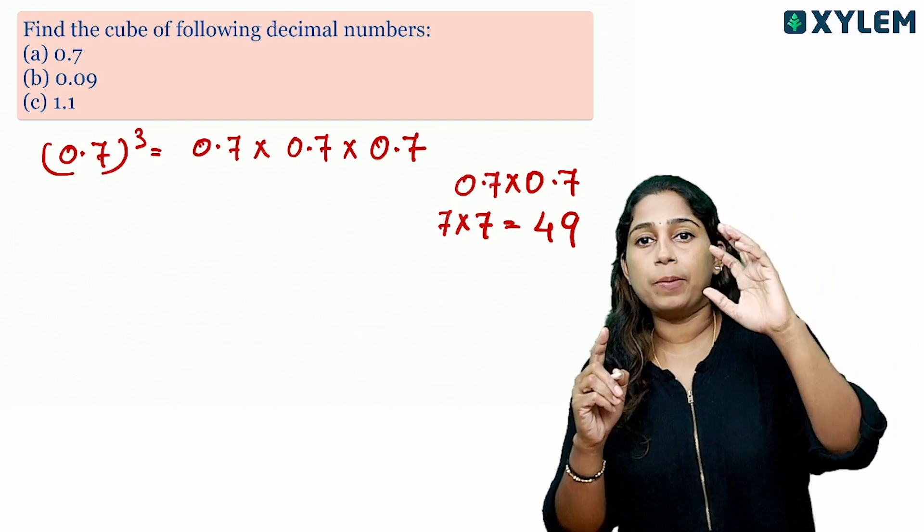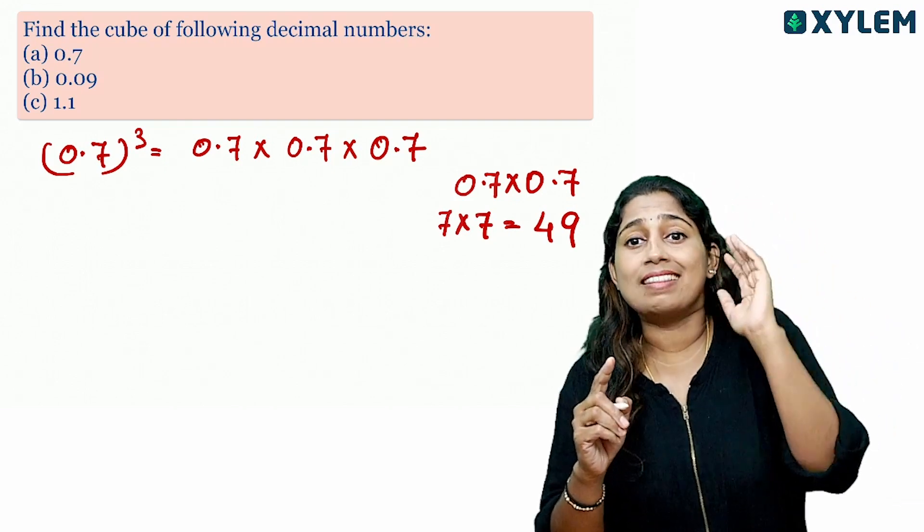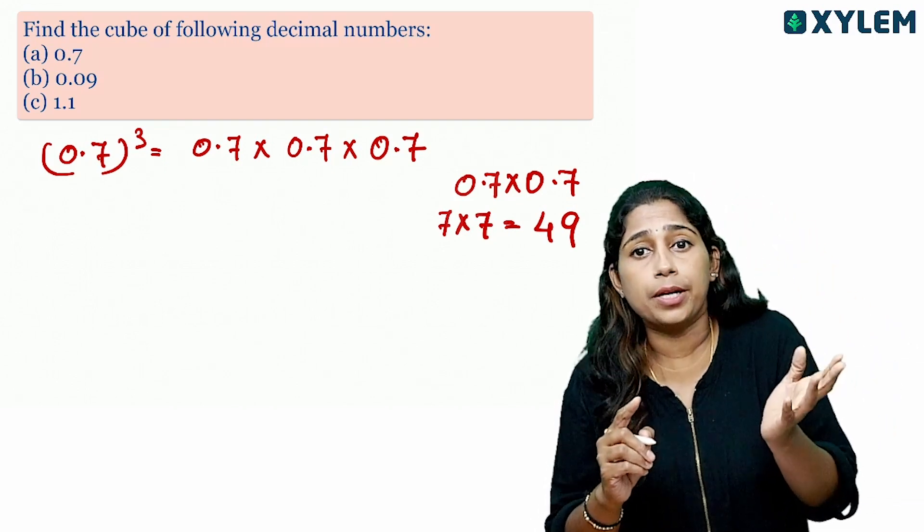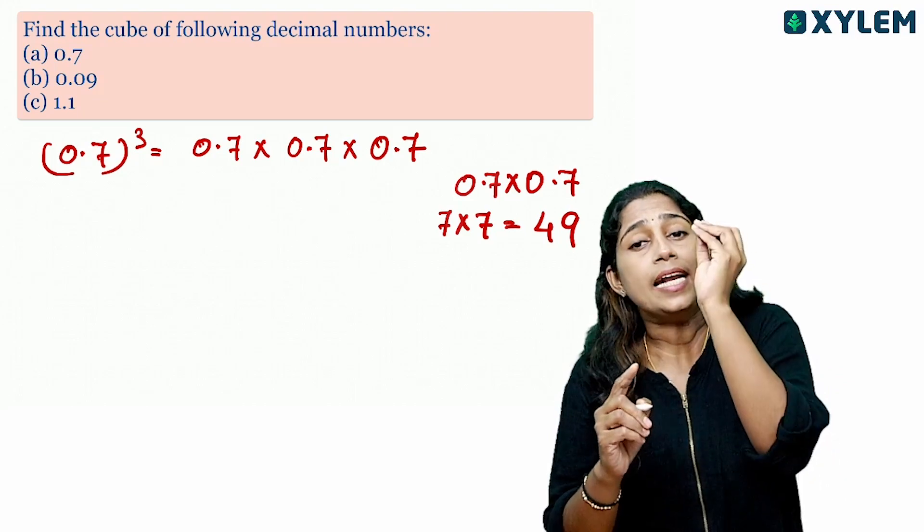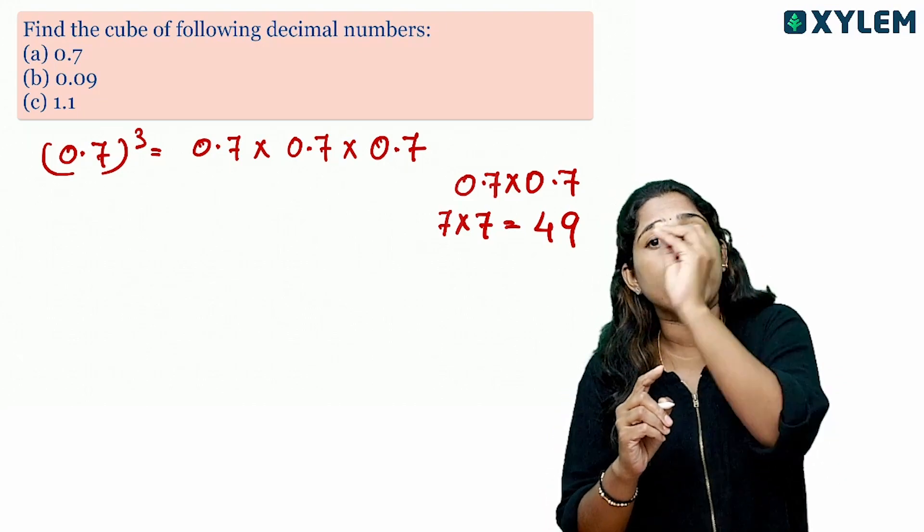First, multiply the numbers and multiply the decimal numbers. That is, we count the decimal point digits in each number.